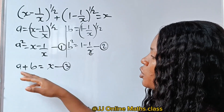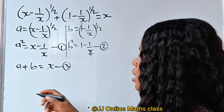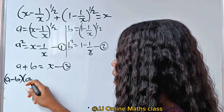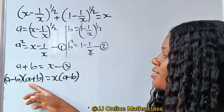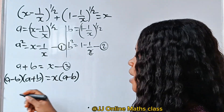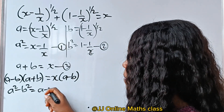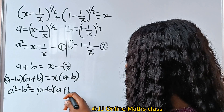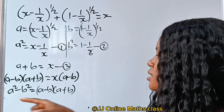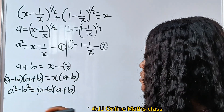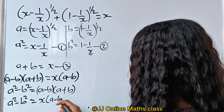The difference of two squares can only be introduced if we multiply both sides of equation 3 by a minus b. So if we say a minus b multiplied by a plus b equals x multiplied by a minus b, this gives us the difference of two squares. We can write that a squared minus b squared equals x times bracket a minus b.